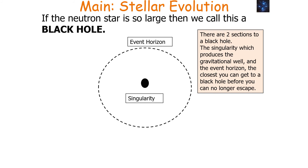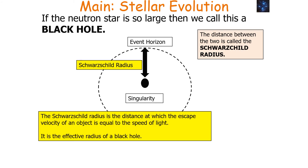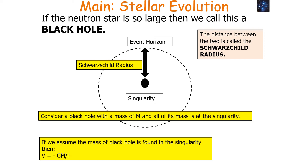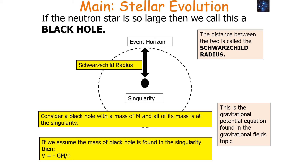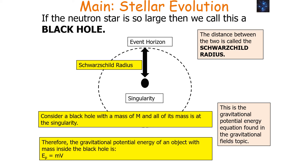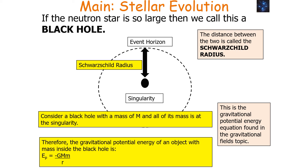There are two sections to a black hole: the singularity, which produces the gravitational well, and the event horizon — the closest you can get to a black hole before you can no longer escape it. The distance between the two is called the Schwarzschild radius — the distance at which the escape velocity of an object equals the speed of light, and it's the effective radius of a black hole. Assuming the mass of a black hole is found in the singularity, we use V = −GM/R (the gravitational potential equation) and E_P = MV (gravitational potential energy), giving E = −GMm/R.